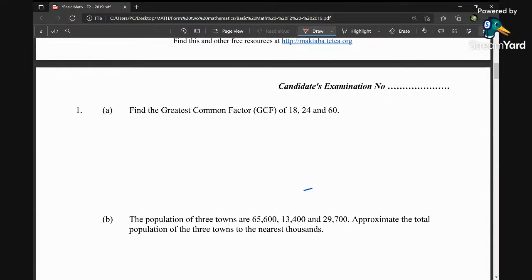Here are the questions. Question number one, part a: we are supposed to find the greatest common factor of 18, 24, and 60. You know, a common number which is going to divide 18, 24, and 60 without a remainder.